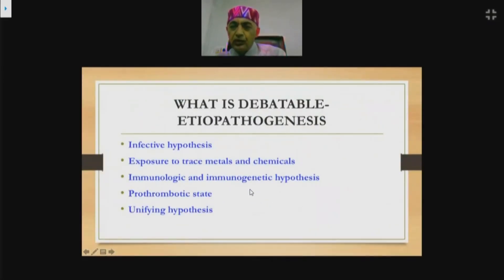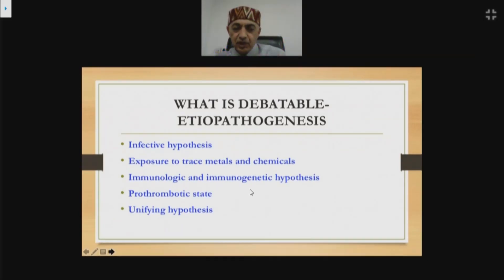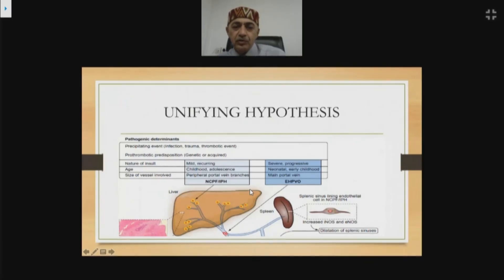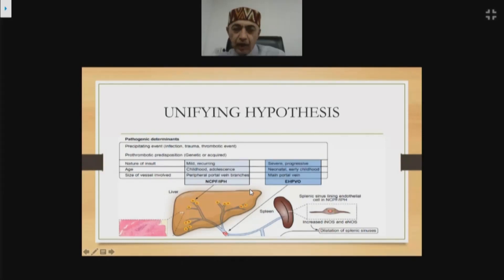There is much debate about the etiopathogenesis of NCPF: is it infections, exposure to trace metals and chemicals, immunological or immunogenetic factors, a pro-thrombotic state causing phlebothrombosis of small and medium portal venous radicals, or a combination? The unifying hypothesis proposes that a precipitating event — infection, trauma, or a thrombotic event — in the presence of an underlying pro-thrombotic predisposition (either genetic or acquired) produces two types of injury: early severe infection in childhood causing complete extrahepatic portal venous obstruction (EHPVO); or mild recurring infection later in adolescence involving peripheral intrahepatic portal venous radicals, causing NCPF.